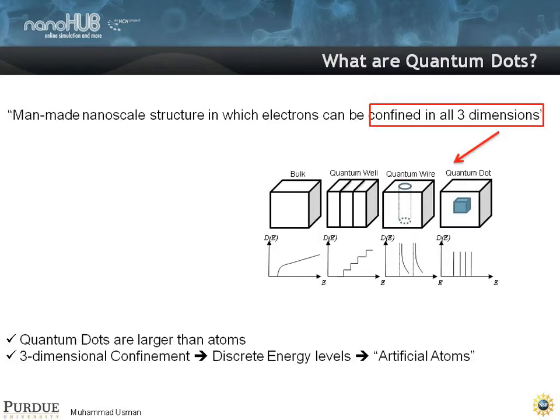There's quantum dots and heterostructures in all kinds of flavors. So in bulk, you don't have any confinement. Your density of states looks like this square root type behavior. In one-dimensional confinement, when you make layered structures like this, you get step-like functions. If you have wires like this, you might have one over square root of E densities of states. And if you have a true 3D confinement, you have delta functions in terms of density of states.